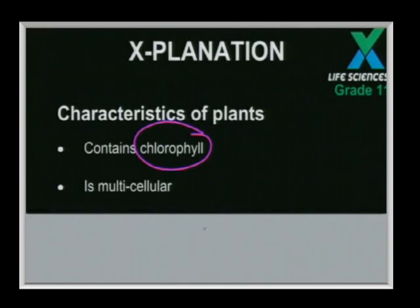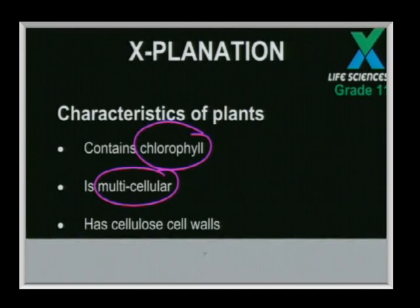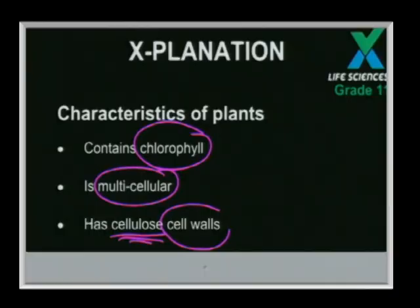Plants are multicellular — as mentioned in the five kingdom system, the kingdom Plantae are eukaryotes but also multicellular. Another major difference between plant and animal cells is that plants have cellulose — one of your carbohydrates — present in a cell structure called the cell wall, which we do not find in any animal cells.